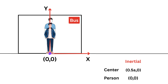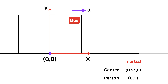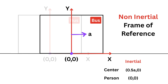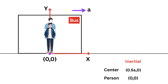Now let's change the story. Suppose I am inside the bus — the observer who was watching from the ground is now inside the same bus, accelerating along with it. My coordinate system is now attached to the center of the bus, so wherever the bus goes, my x and y axes go along with it. My axes will accelerate along with the bus. This kind of moving, accelerating frame is called a non-inertial frame of reference.